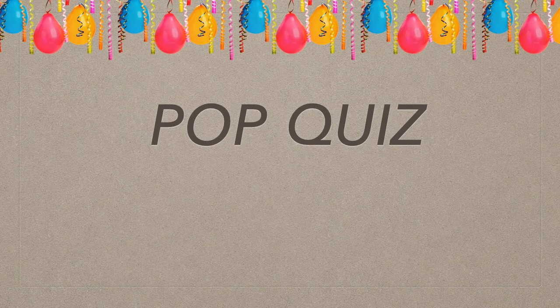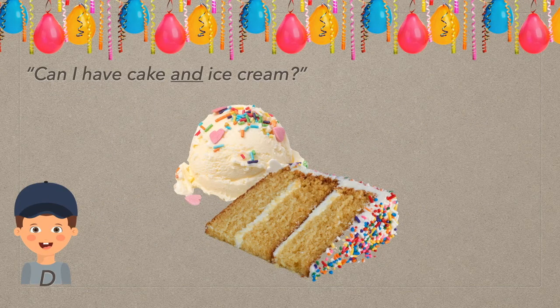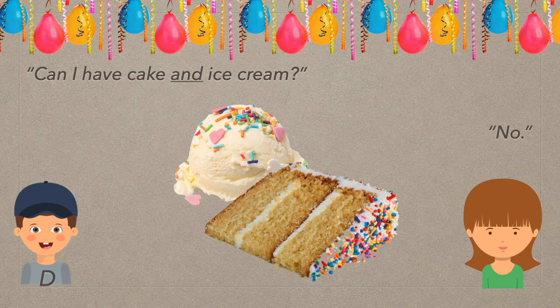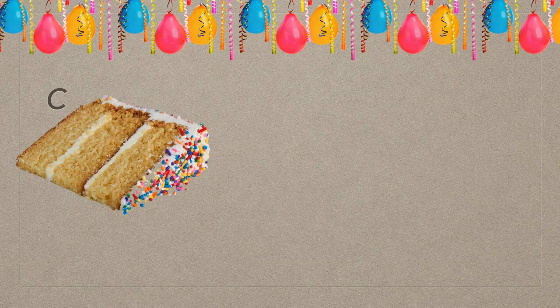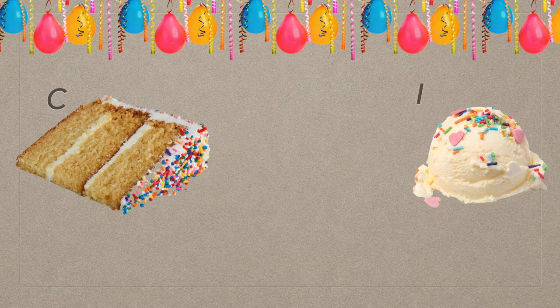Quick practice. At the birthday party, David says, Mom, can I have cake and ice cream? And apparently, being the meanest mom in the world, she says no. If C stands for you can have cake and I stands for you can have ice cream, how would you express mom's answer in symbolic logic? Hit pause and give it a try.